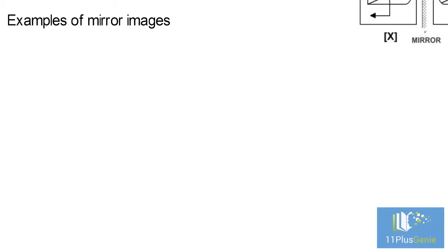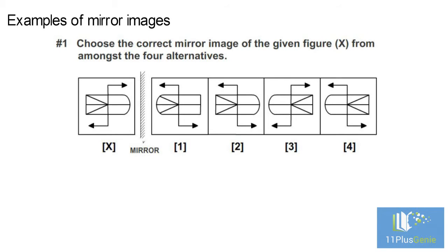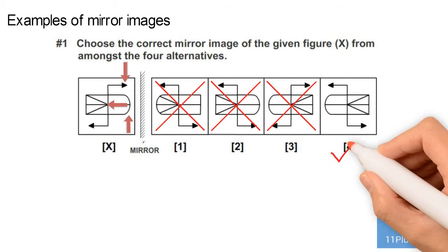Examples on mirror images. Number 1 – Choose the correct mirror image of the given figure from amongst the four alternatives. This rounded part of the diagram is closest to the mirror. In the image it must be closest to the mirror. We can eliminate diagram 2. This top arrow points towards the mirror. In the image it must also point towards the mirror. We can eliminate diagram 3. These two lines start in the middle and open away from the mirror. In the image they must start in the middle and point away from the mirror. We can eliminate diagram 1. The correct answer is diagram 4.